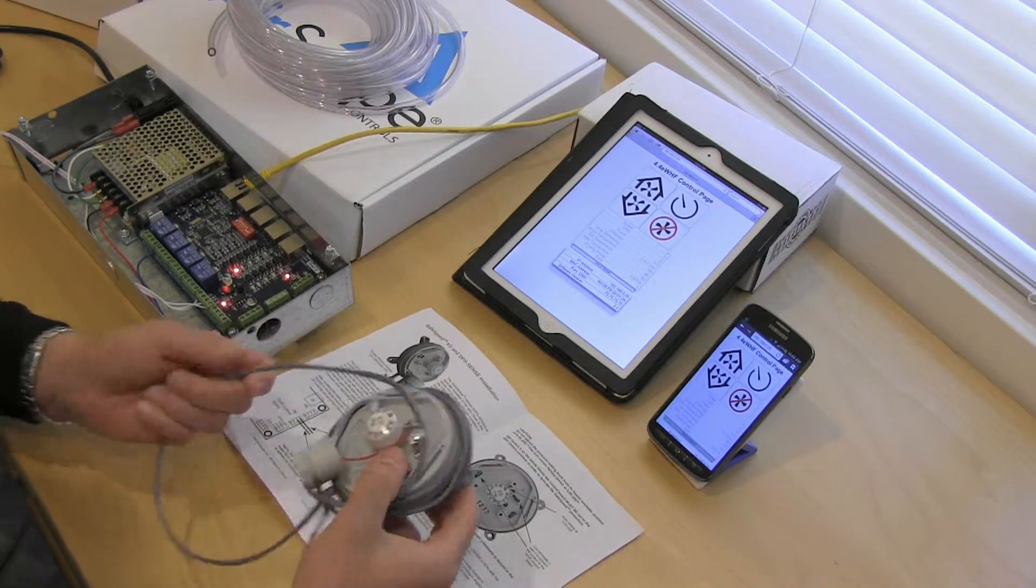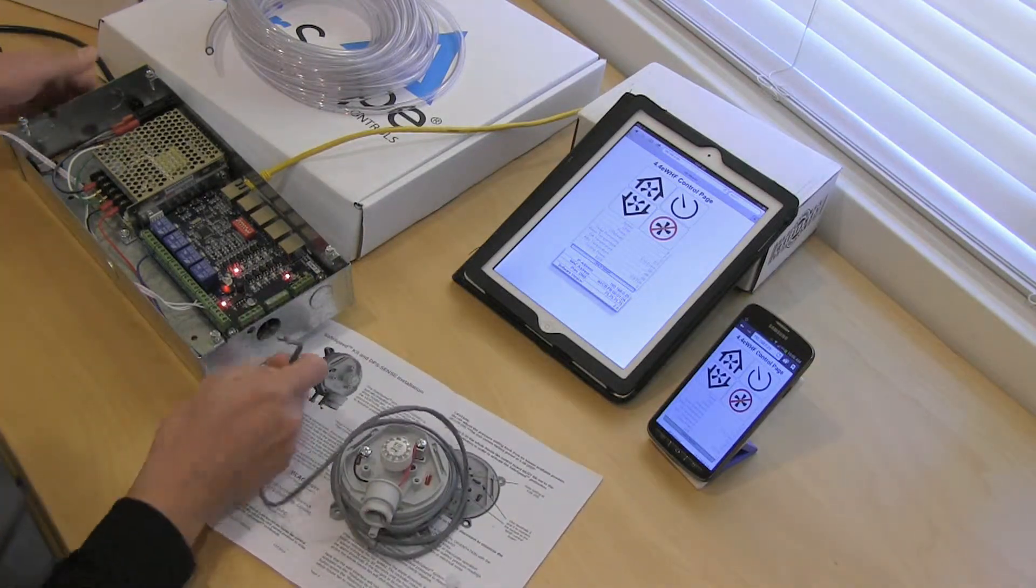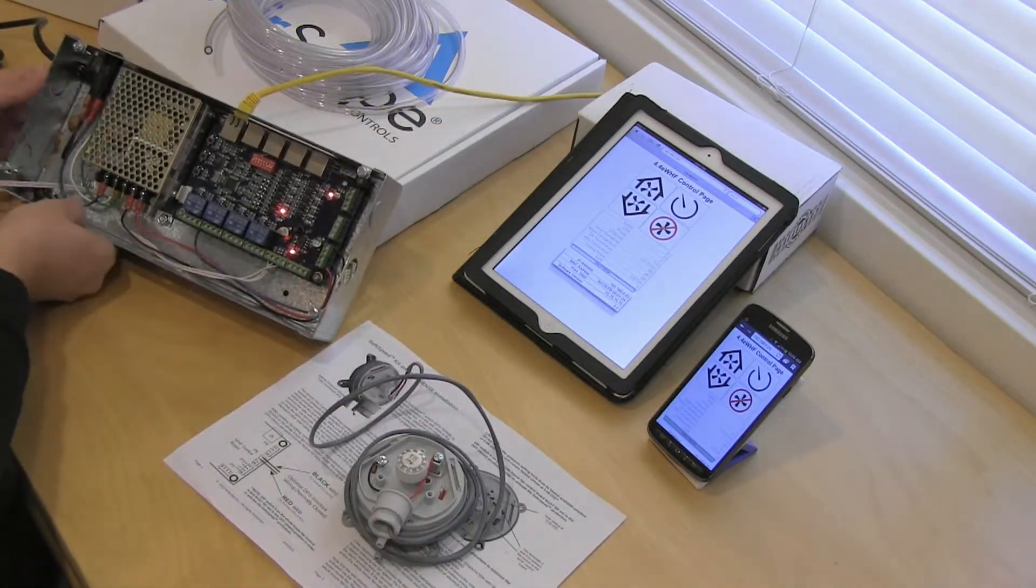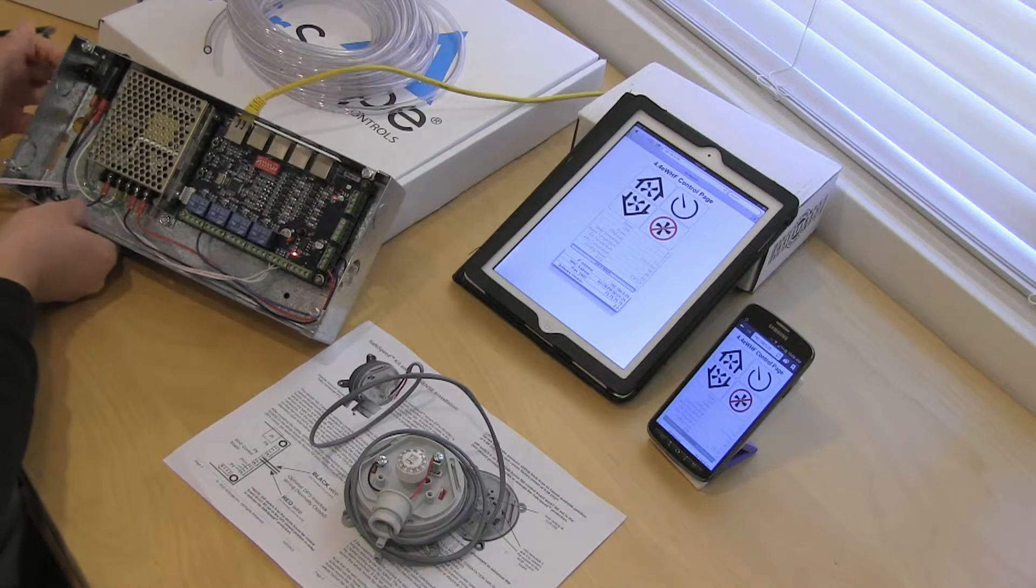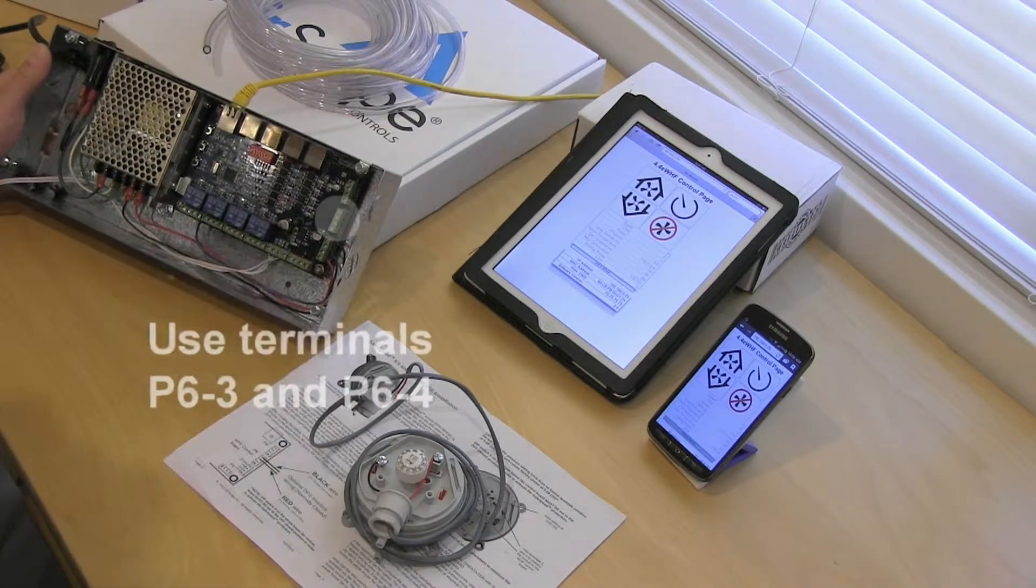Now we have to wire the sensor in, we're going to wire that in on P6 over here. This is P6 and I'm going to turn the power off to the controller. Make sure we've got no power there, that's P6 right there.